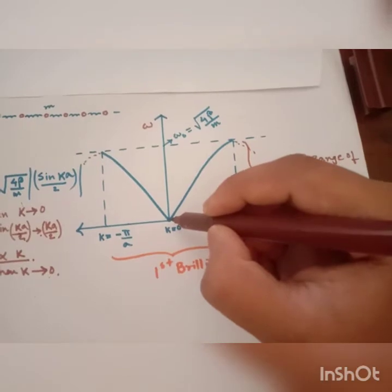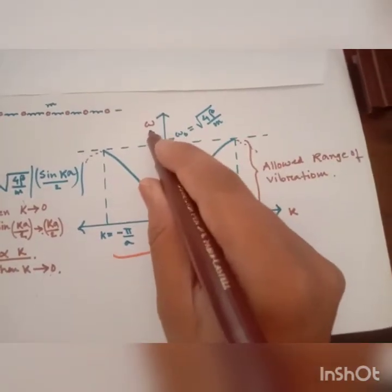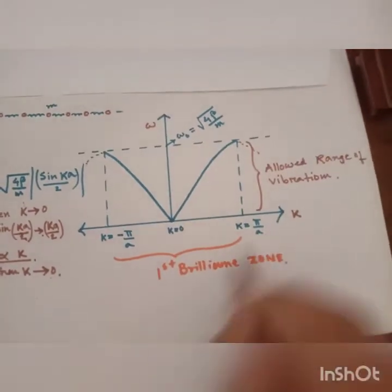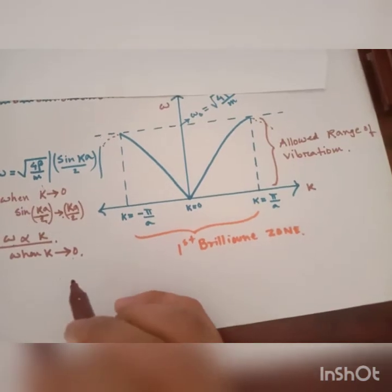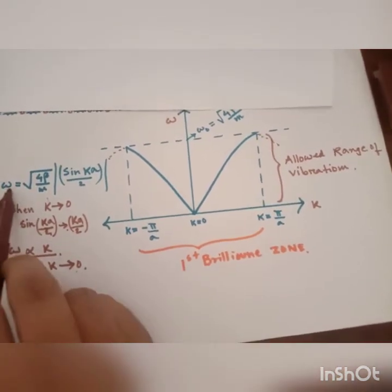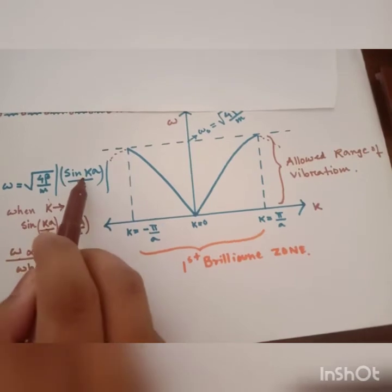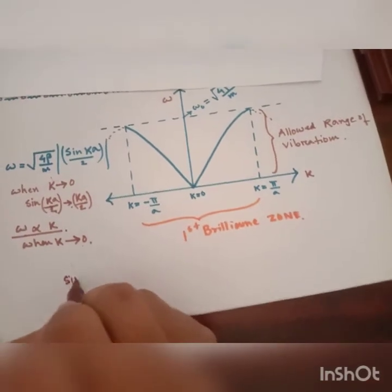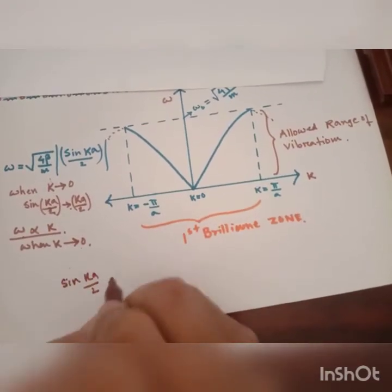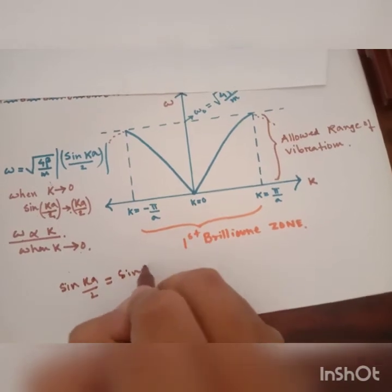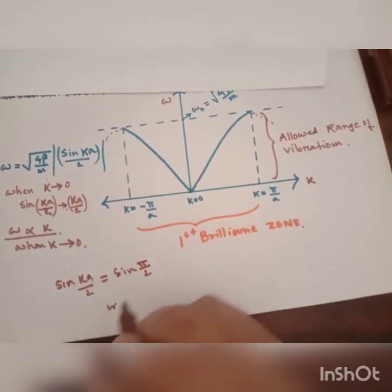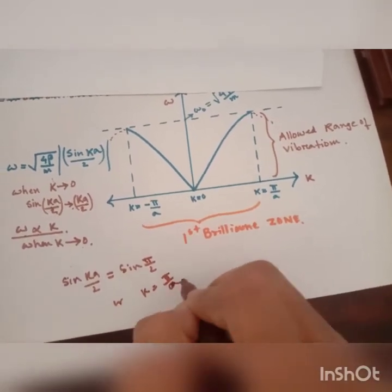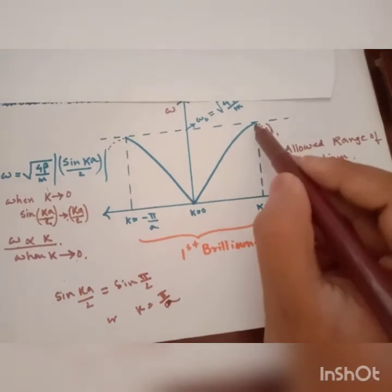The graph reaches a maximum value at k equal to π/a. We can easily calculate the maximum value of omega. For omega to be maximum, sin ka/2 should be maximum. Sin ka/2 is maximum when we have sin 90 degrees, or when k equals π/a. So at k equal to π/a, we have omega at its maximum.